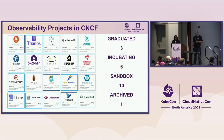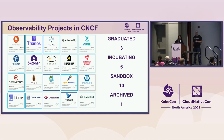OpenTelemetry is the second largest project in terms of contributions in the CNCF space, right after Kubernetes. There are ten sandbox projects and one archived project, which is OpenTracing. OpenTracing has essentially merged along with OpenCensus into OpenTelemetry, so the modern project today for that is OpenTelemetry.